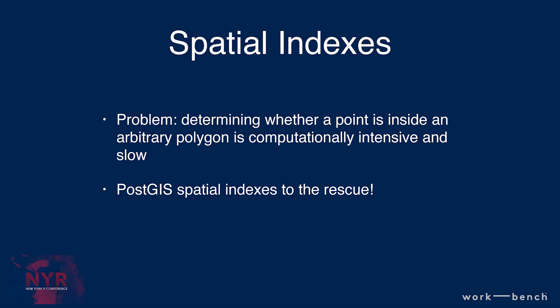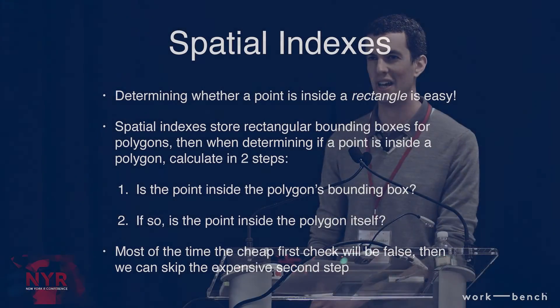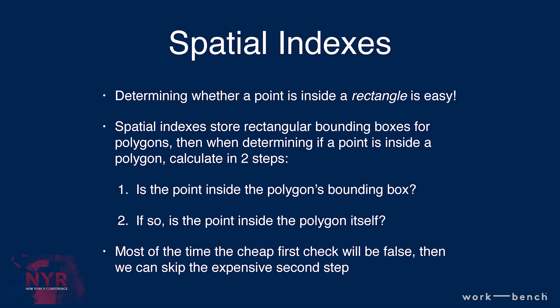There's a problem: it turns out to be very slow and computationally intensive to figure out whether a point is inside an arbitrary polygon. The solution is something called a spatial index. You draw a rectangular bounding box around each census tract polygon. It's easy to check whether a point is inside the bounding box — you just check the x coordinate of the point against the x bounds of the rectangle, same for y. If it's not inside the bounding box, you stop and don't do the expensive full polygon check. Most of the time this first easy check comes back false, saving a lot of time.